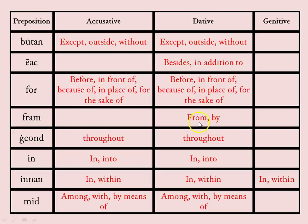'Fram' — dative only — meaning 'from,' 'by.' 'Geond' — meaning 'throughout,' same again for the dative. 'In' — meaning 'in,' 'into' — both accusative and dative forms are the same. 'Innan' — meaning 'in,' 'within' — same for accusative and dative, and also for the genitive as well. 'Mid' — meaning 'among,' 'with,' 'by means of' — accusative and dative are the same.